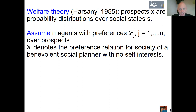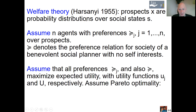We assume the social planner is benevolent with no self-interest — the only goal is to do the best for all people together, making as many people as happy as possible. The question is: how can we aggregate individual preferences into a social preference in a good manner? We assume that all individual preferences and the social planner's preference maximize expected utility. The utility functions u_j are defined for every individual agent over the social states, and U is the resulting utility function of the social planner.